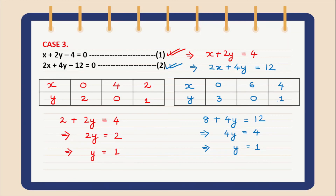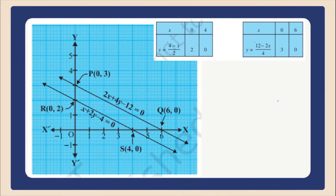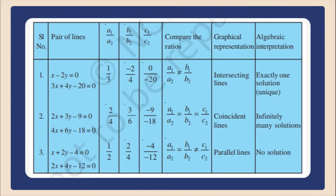Now let us plot these two solution tables on graph and you will get something like this. Let us tabulate our observations. You can also algebraically check — without representing on a graph — whether the lines will be intersecting, coinciding, or parallel. For all three cases: intersecting lines give a unique solution, coinciding lines give infinitely many solutions, and parallel lines give no solution. Since there is no solution for parallel lines, the system will be inconsistent. In the above two cases, the system will be consistent since they have solutions.